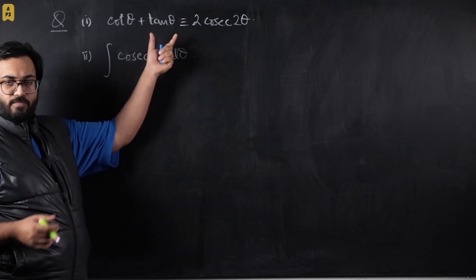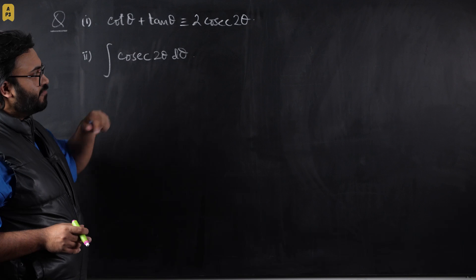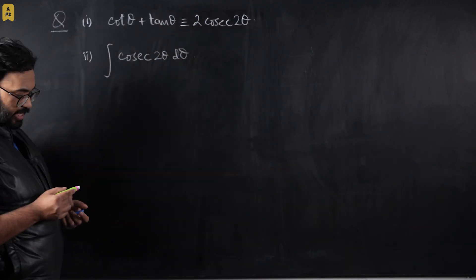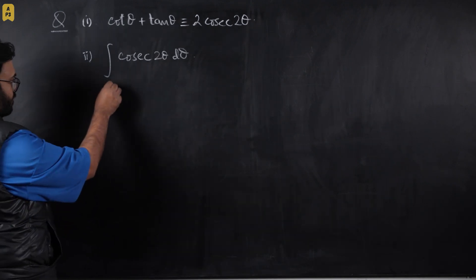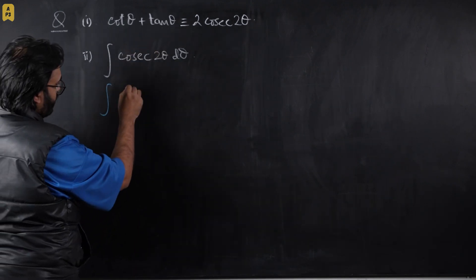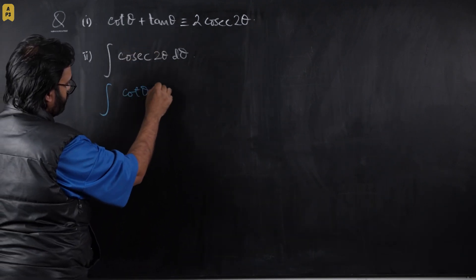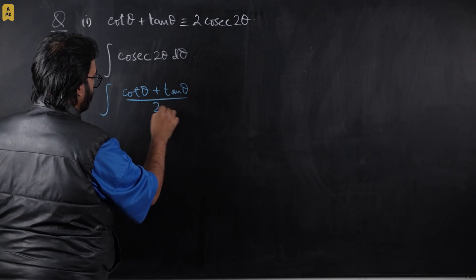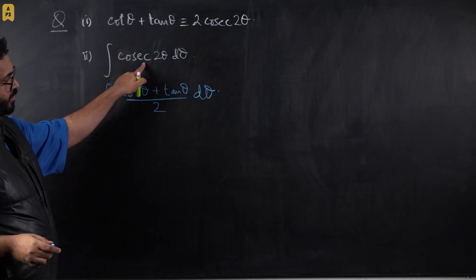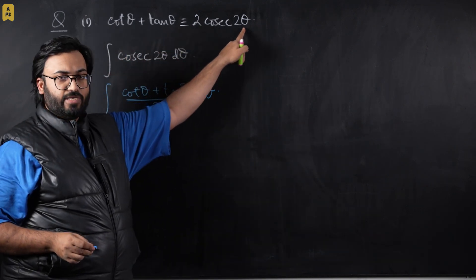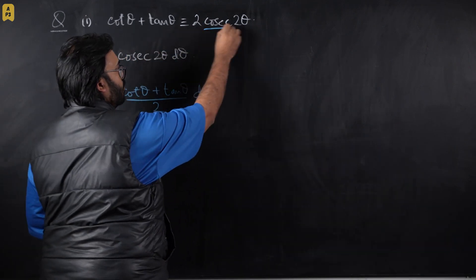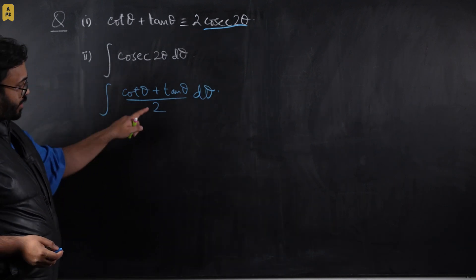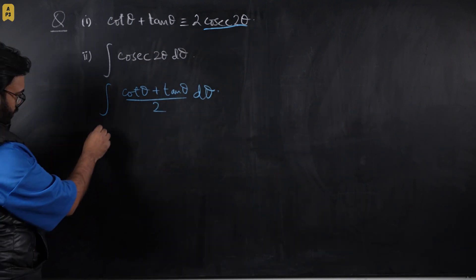So it will now become really easy for you. You're going to make cosecant 2θ subject from the identity above and we can see it will become integral of (cot θ + tan θ)/2 dθ. For this step, what I have done is I have made cosecant 2θ subject from the original equation, the identity that was given in the first part. Now we can take 1/2 common outside.